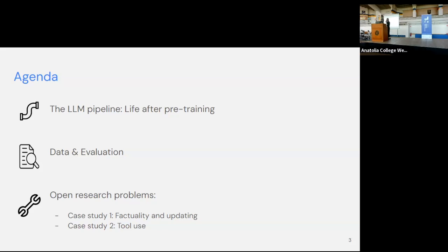First, a part about the LLM pipeline in general — mainly covering everything that happens after pre-training. Then a section on data and evaluation. And I'll end with two research topics I find currently quite interesting: one is factuality and updating large language models, and the other is tool use. Obviously there's much more we could discuss, but these are the two I cherry-picked because I'm excited about them right now.